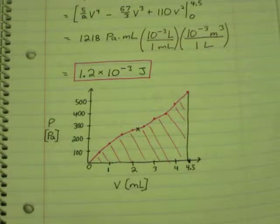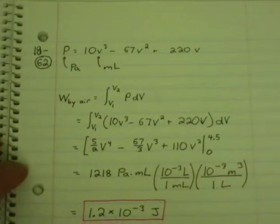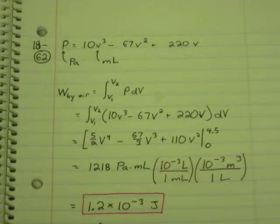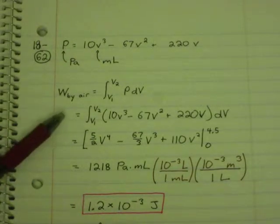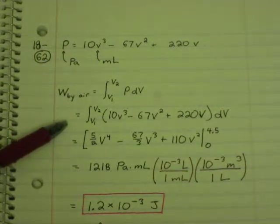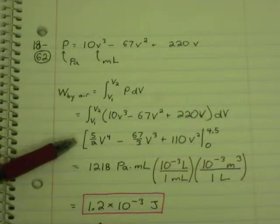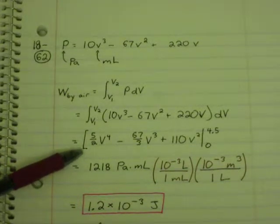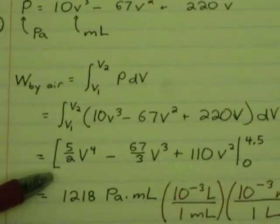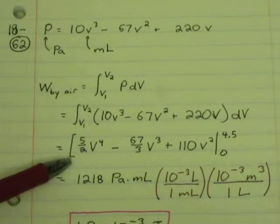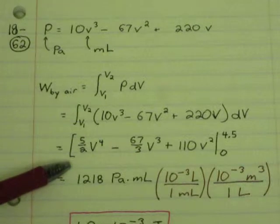But the problem is asking us to find the area under this curve. What is the work done? So there's our formula given, pressure equals, and it's a function of volume. We have to keep in mind, pressure is given in pascals. Volume is in milliliters. So I would keep the numbers the way they are. They're nice and convenient. But in the end, we have to recognize that we need to convert. So work done by the gas, I wrote here, by the air, is the positive of that integral. So there's the formula. We're going to take the integral with respect to dV. And hopefully that's not too hard. You have 5 halves V to the fourth minus 67 thirds V cubed plus 110 V squared, integrating from 0 to 4.5.